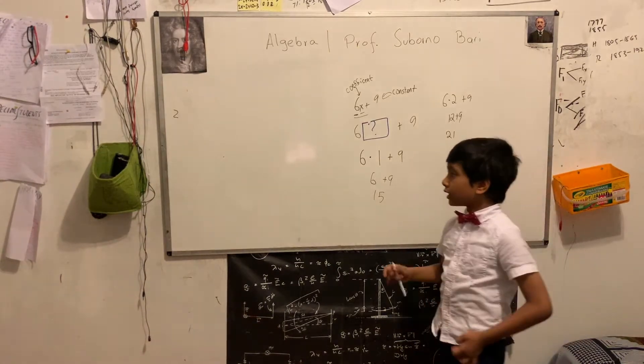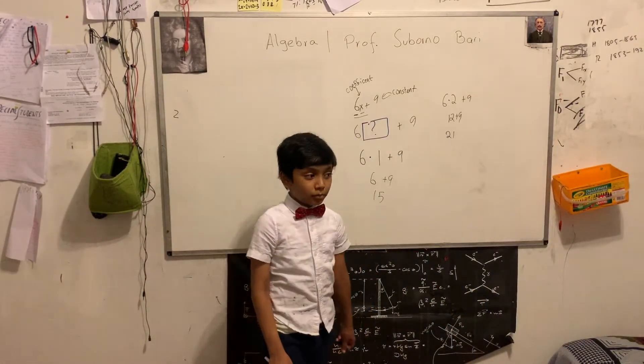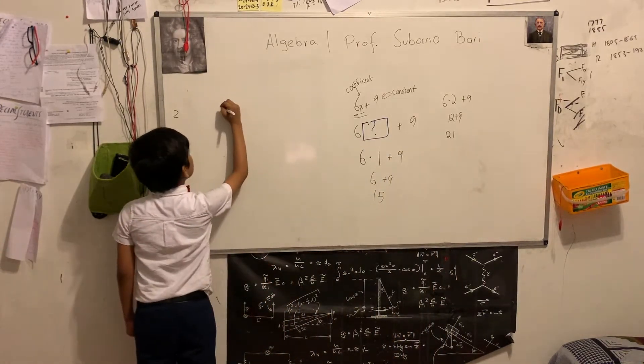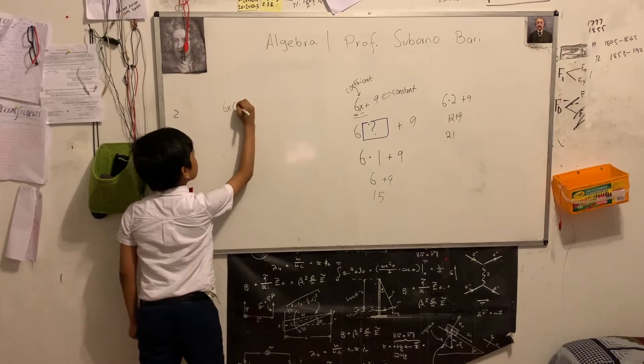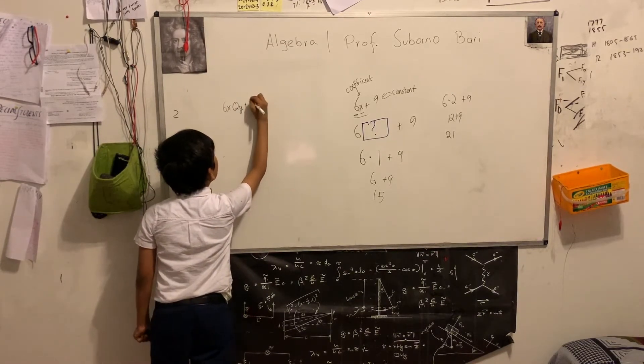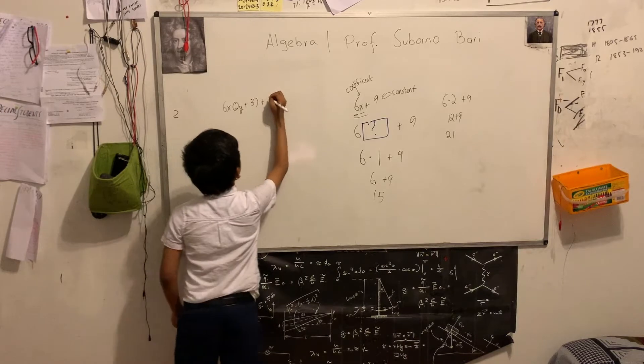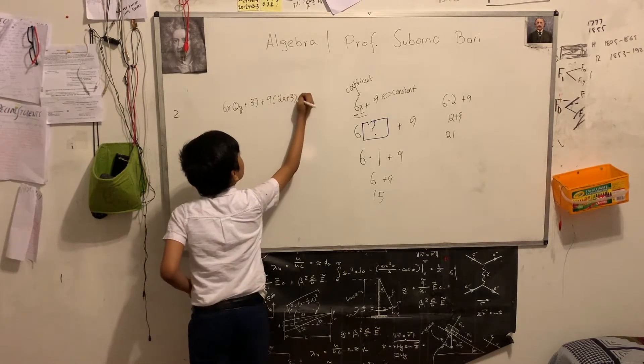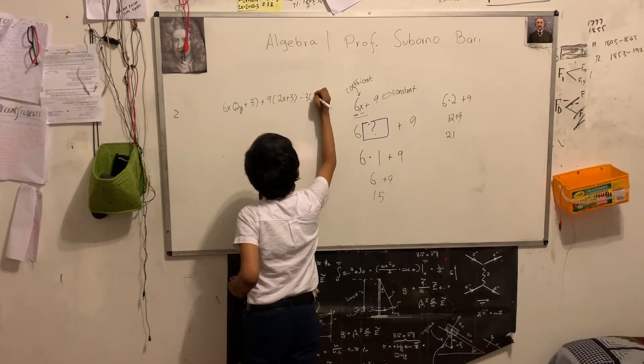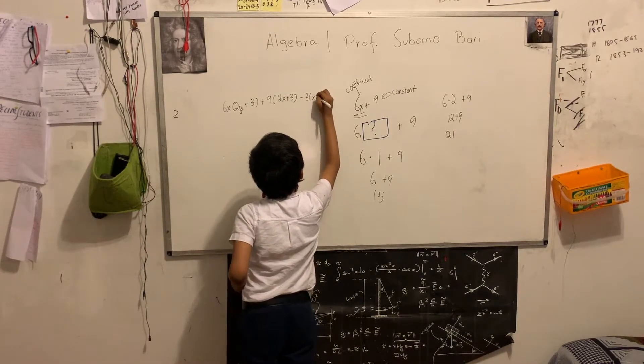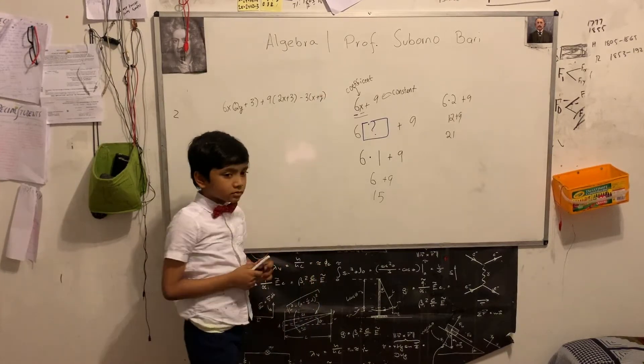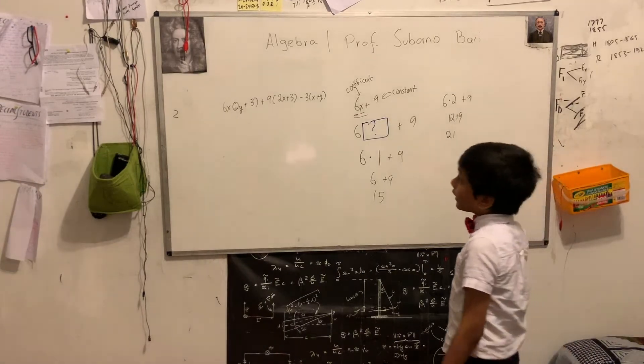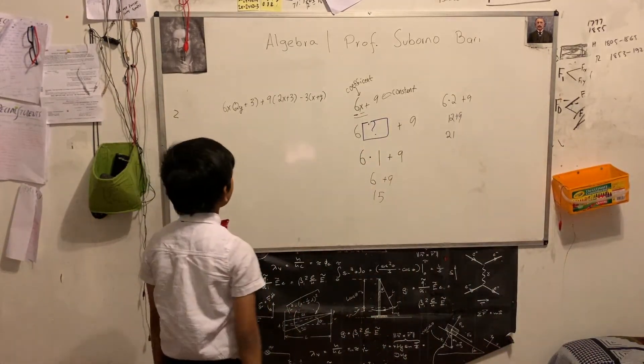But anyways, we're going to look at a very monstrous example, if I do say so myself. So, 6x times 2y plus 3 plus 9 times 2x plus 3 minus 3 times x plus y. Now, this looks monstrous. Horrifying.